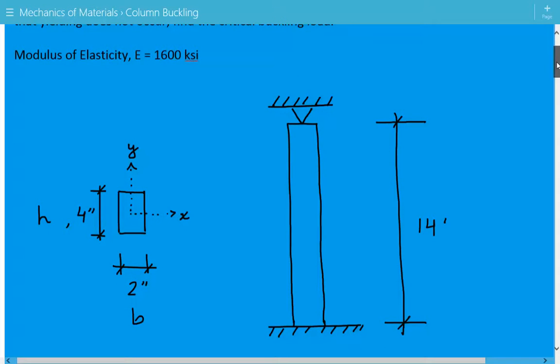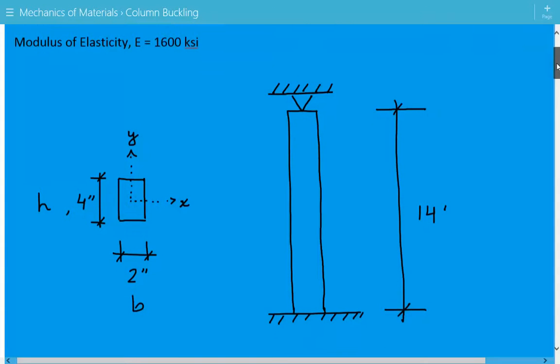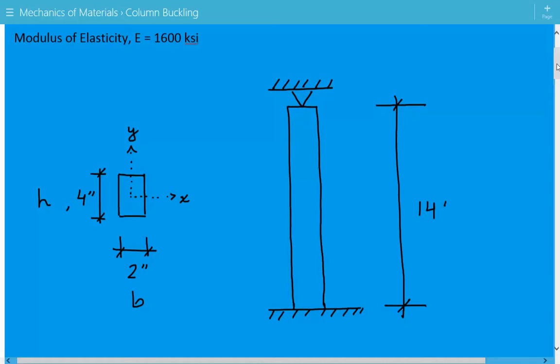Here's a figure of our wooden rectangular column. It's fixed at the bottom, pinned at the top, and has an unbraced length of 14 feet.